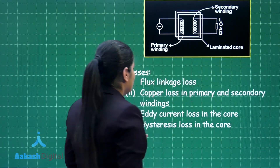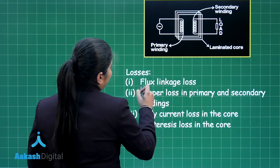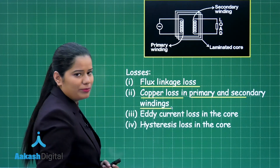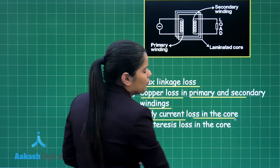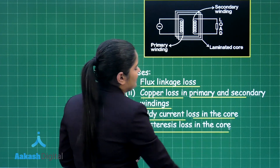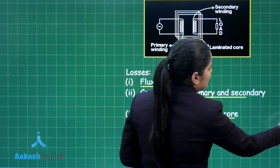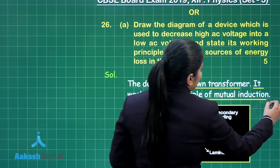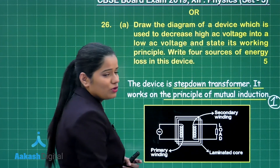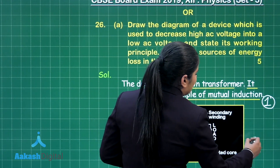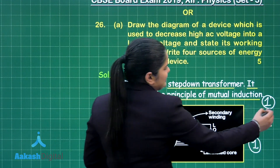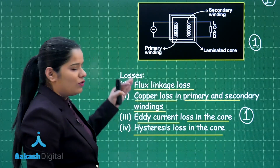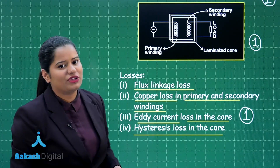You also need to mention four losses: flux linkage loss, copper loss in primary and secondary windings, eddy current loss in the core, and hysteresis loss in the core. You get one mark for identifying the device and writing the principle, one mark for drawing the diagram of the step-down transformer, and one mark for writing the four losses.